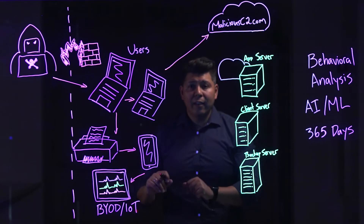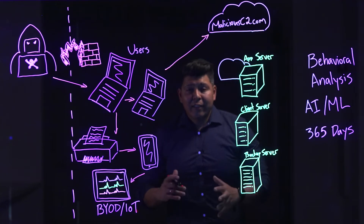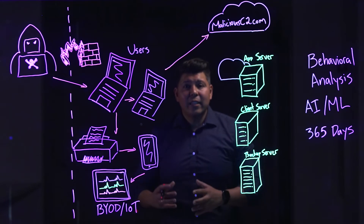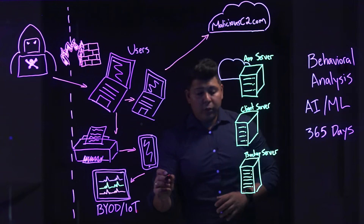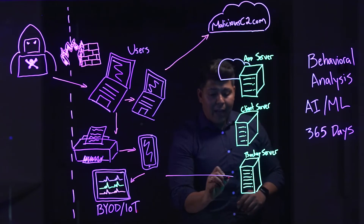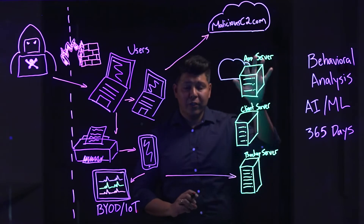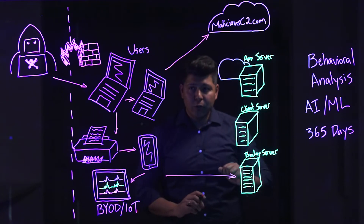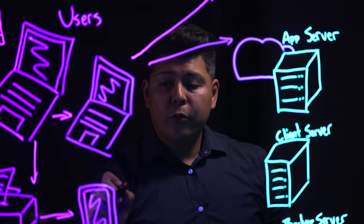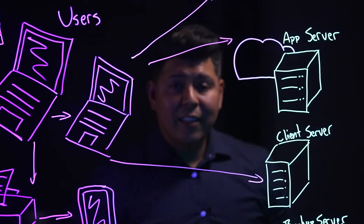Once they've done that, they need to escalate their privileges. They're going to continue to try to find that sensitive information on your network. So maybe they go and take a look at your backup servers, your client servers, application servers — all of these are opportunities for them to find that sensitive data.